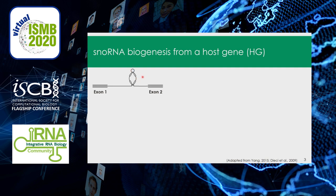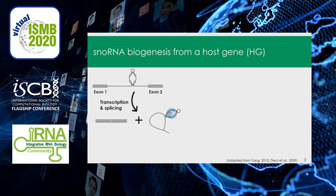The majority of snoRNAs are encoded in the intron of a gene called the host gene, which can either be protein-coding or non-coding. The expression of the snoRNA depends on the transcription and splicing of the host gene. This produces an intronic lariat containing the snoRNA, which is then debranched, and exonucleases cleave the rest of the intron until the ends of the snoRNA, which are protected by bound proteins.